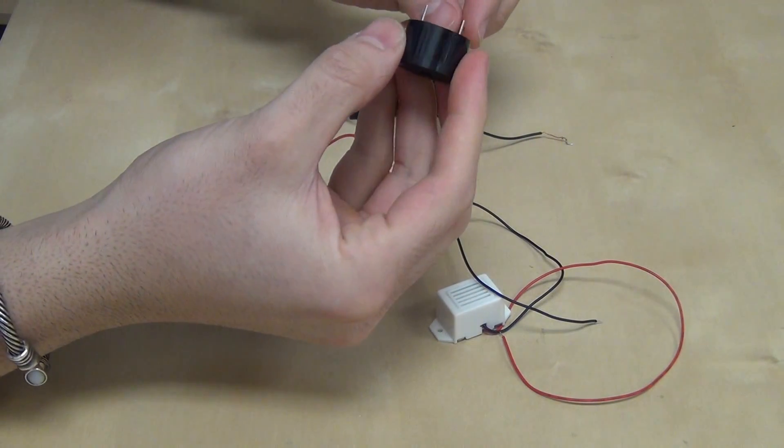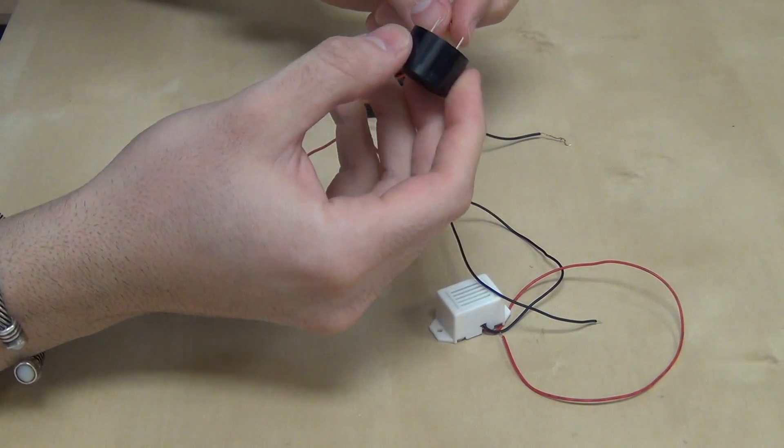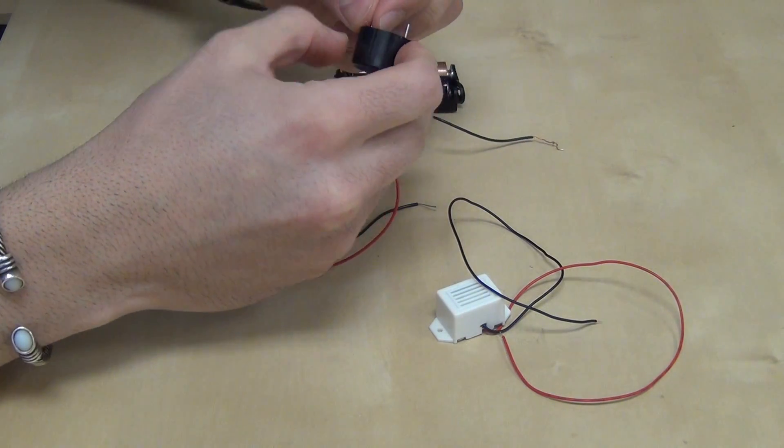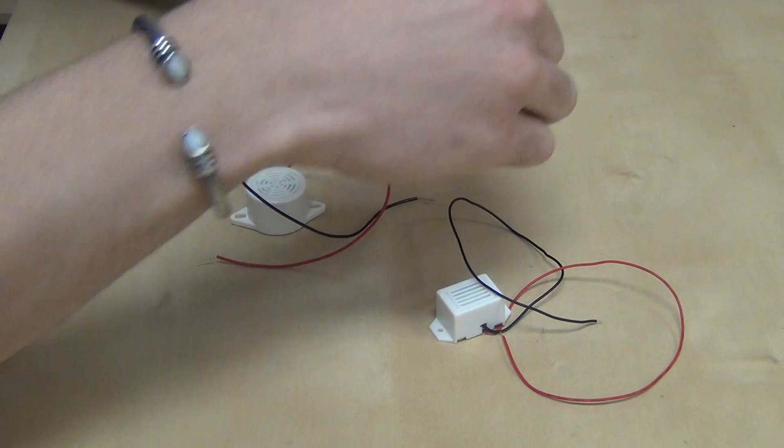This one is the buzzer Piezo Ceramic, one and a half volt to about twenty volts. This has a positive and negative side so it's important which wire is connected to which. So let's see how this one sounds.